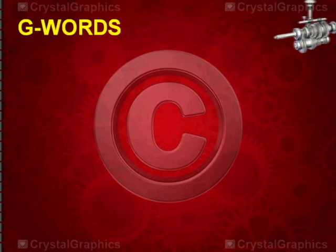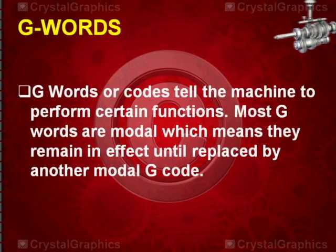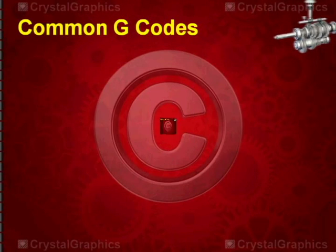Now let us discuss what are these G words. G words or codes tell the machine to perform certain functions. Most G words are modal, which means they remain in effect until replaced by another modal G code. Now let us discuss some common G codes used to write the part program.